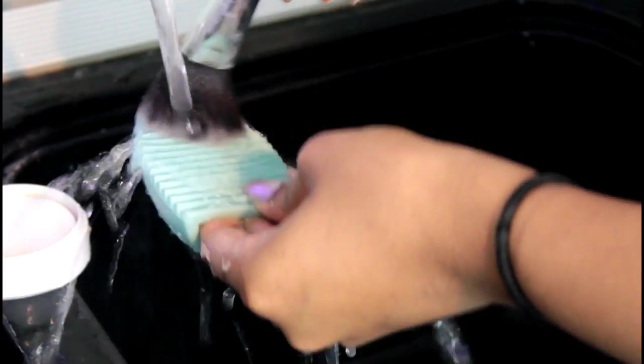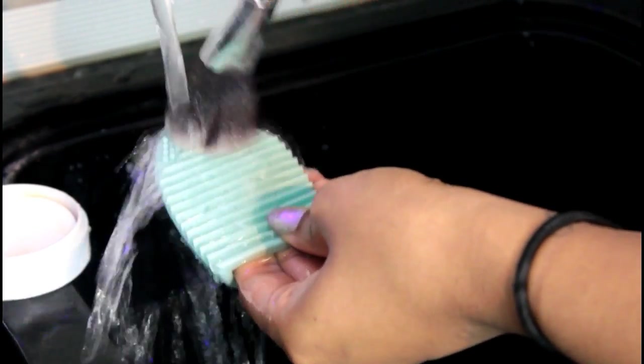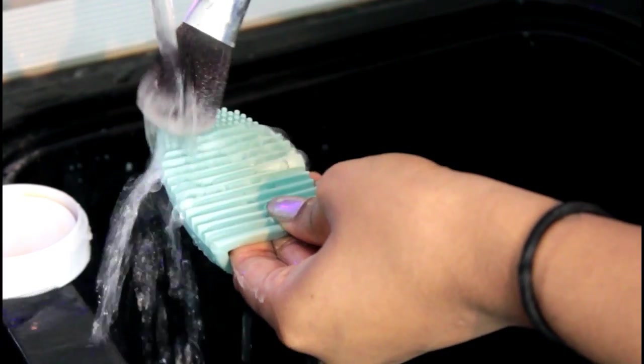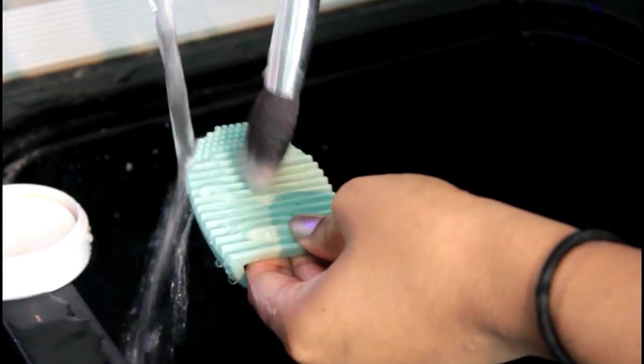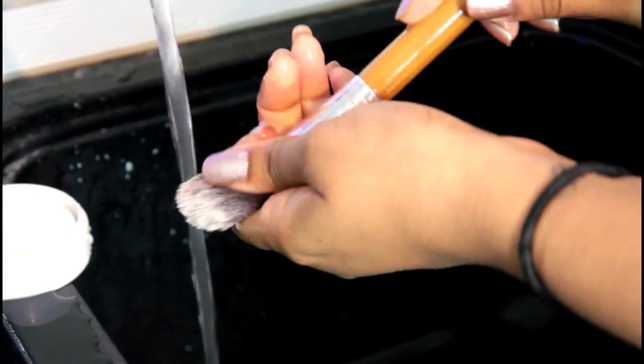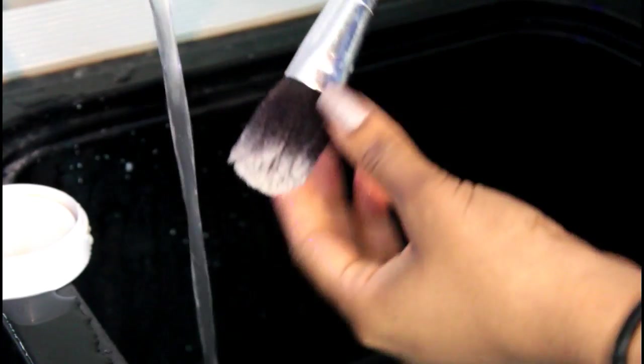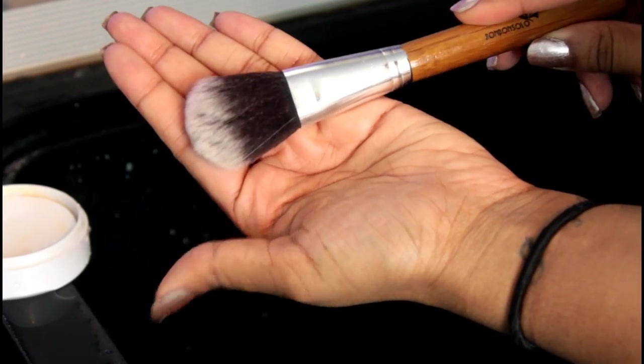And then I like to use it as well to rinse off the soap. Make sure to scrub it gently, don't be too harsh with it because you don't want to ruin your brush either. And once that's all washed off, I like to squeeze it and take out all the excess water.